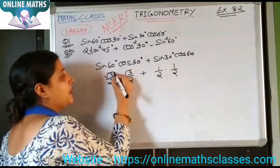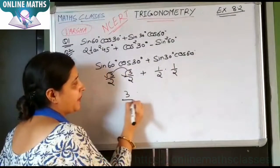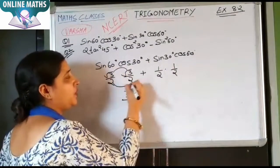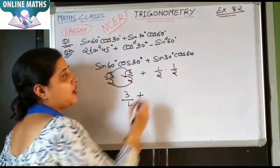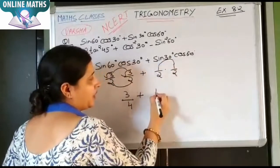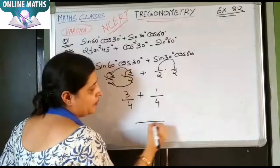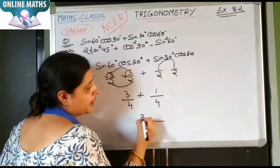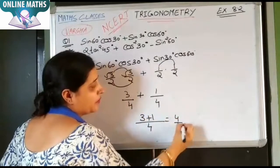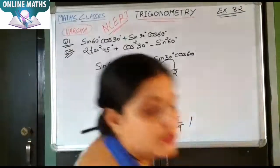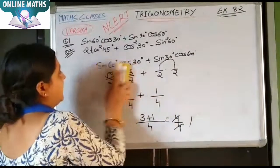Multiplying: root 3 into root 3 is 3, upon 2 into 2 is 4, plus 1 into 1 is 1, and 2 into 2 is 4. So 3 plus 1 equals 4, upon 4 is 1. The answer to part one is 1. Now come to part two.